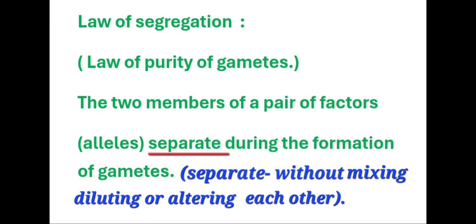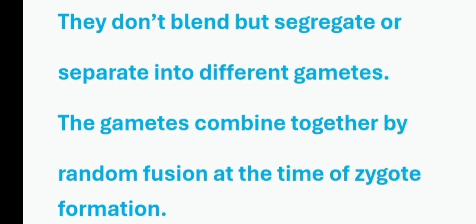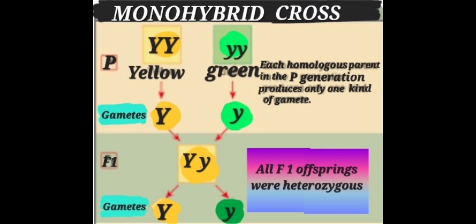Next is the law of segregation, also known as the purity of gametes. The two members of a pair of factors, that is, alleles, separate during the formation of gametes. They do not blend, but segregate into different gametes, and the gametes combine together by random fusion at the time of zygote formation. In other words, in a hybrid union, the members of an allelic pair remain together without mixing, diluting, or altering each other, and they separate during gamete formation, with a chance to combine by random fusion at zygote formation.